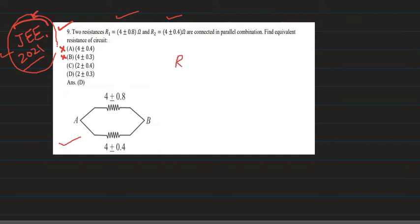As we know, for parallel combination, Rp is equal to R1 R2 divided by R1 plus R2. And after solving that expression, we can get 4 into 4 divided by 4 plus 4 and it is equal to 2 ohms.